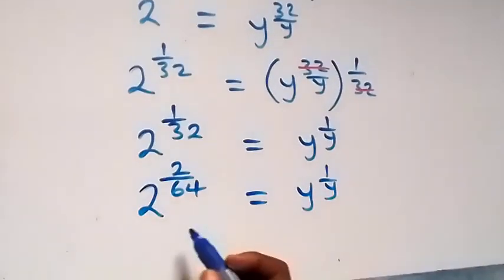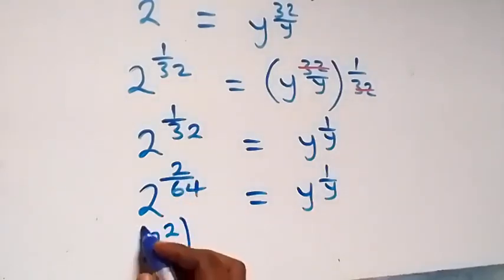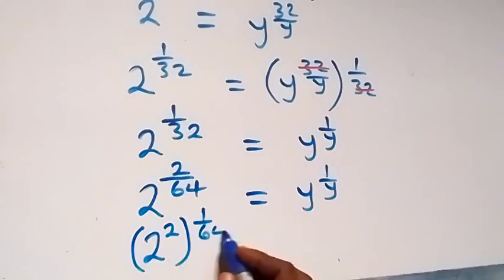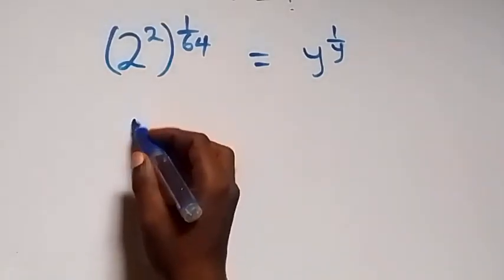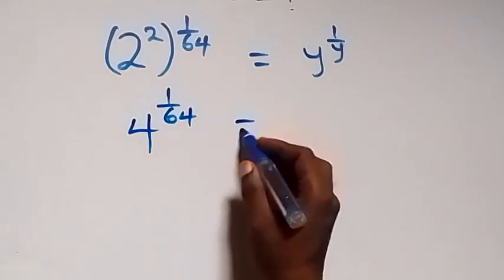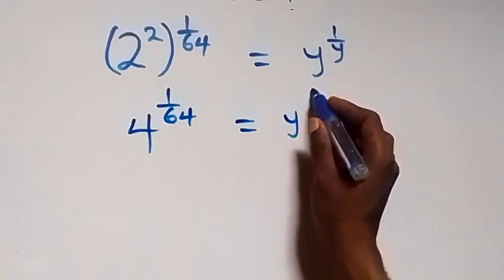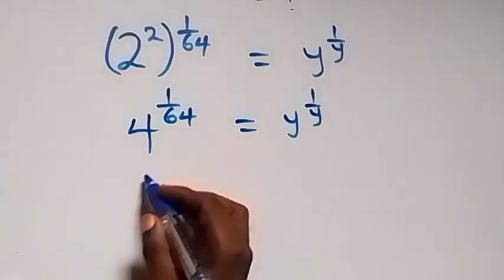Next we can separate these two: 2 raised to power 2, raised to power 1/64, equals to y raised to power (1/y). Then 2 raised to power 2 gives us 4, so we have 4 raised to power (1/64) equals to y raised to power (1/y).